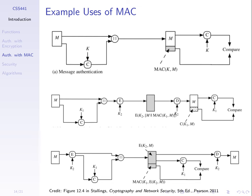A MAC function requires the property that two different inputs produce two different outputs. In practice, the MAC function produces a small-length output but takes a large-length message as input, so it's possible in theory that two messages will map to the same tag. The security of a MAC function depends upon how hard it is for the attacker to find such two messages. With a large tag length, it's very hard to find two messages that map to the same tag.